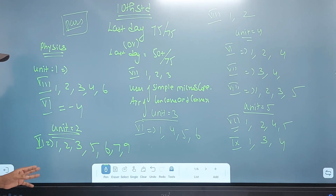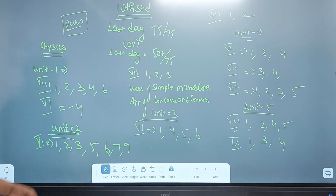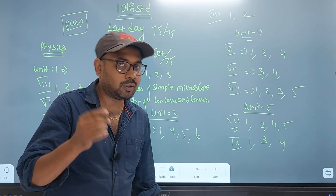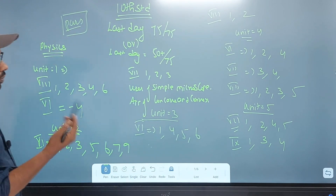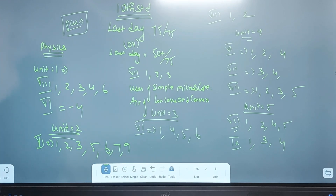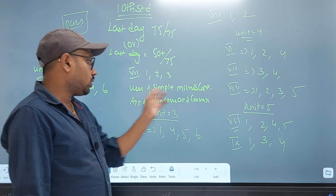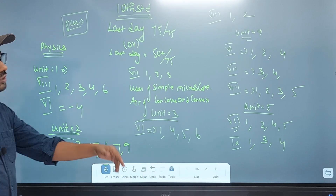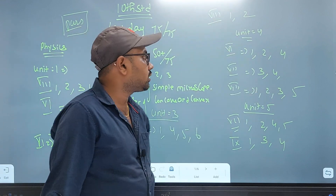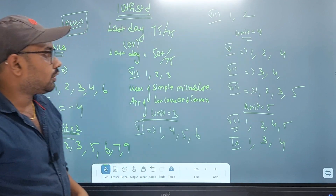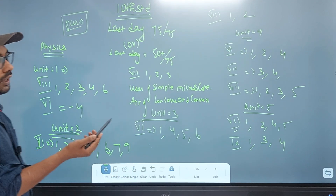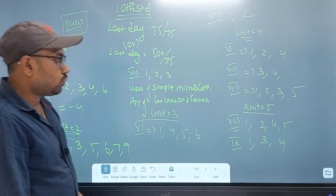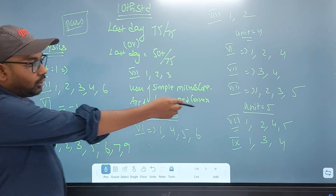Look at this question in unit 2: 2 mark, 4 mark, and 7 mark. And unit 3 also has 2 mark, 4 mark, and 7 mark — 1, 2, 3. There are 2 questions in unit 3, 6 questions in unit 6, 8 questions in unit 4, and 4 questions in unit 4. 2 marks in unit 5.